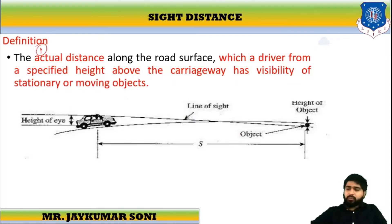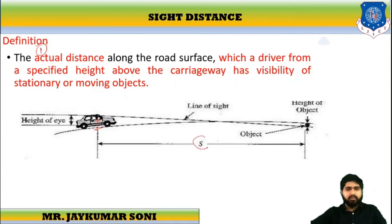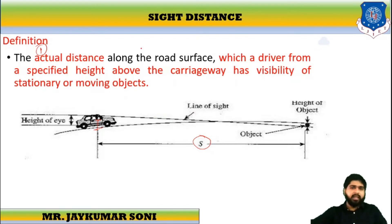It looks like this: whenever I am traveling on the road, say I am sitting over here. This is my height above the road surface. This is one of the objects placed over here. Whenever I am traveling over this surface, I should have the visibility — by sitting over here — of this particular object. There should be some distance S from me to that object. This line through which I am able to see is called the line of sight, and S is called as sight distance.